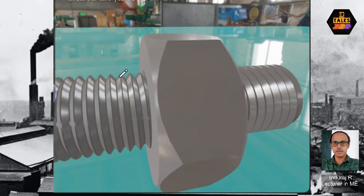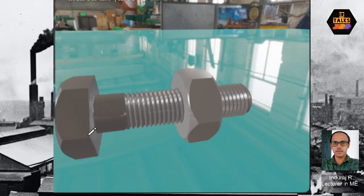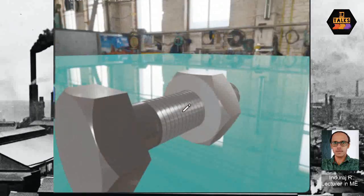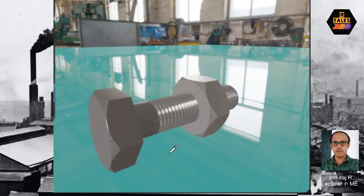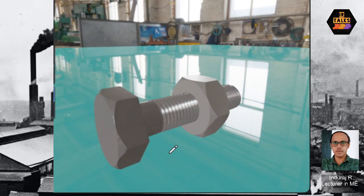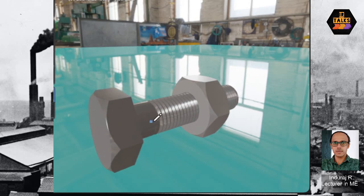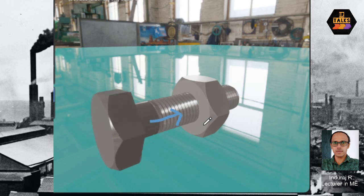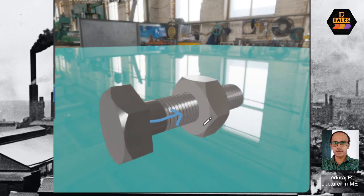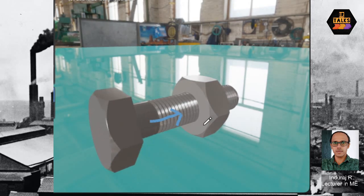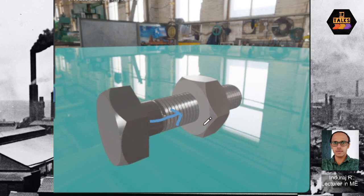Thread profile shapes include V-shape, square thread, acme thread, ball thread, and other types. For a right-hand thread, rotating it causes inward axial movement. After one complete revolution, that axial movement distance is called the lead.